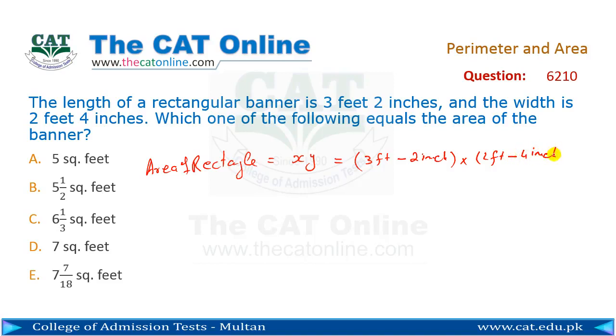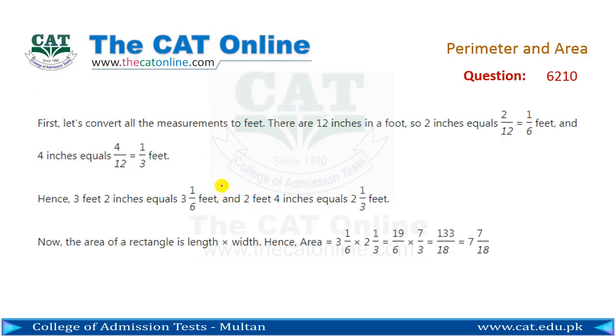First we convert the units so that we can get the product. There are 12 inches in 1 foot. 2 inches is equal to 2/12, which is 1/6 feet, and 4 inches equals 1/3 feet.